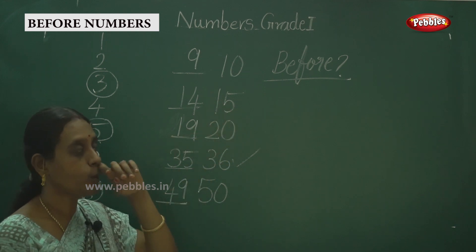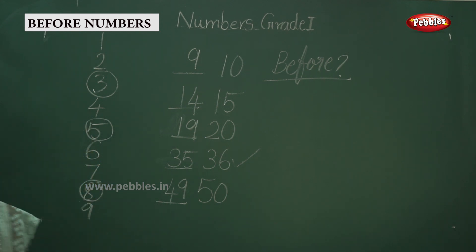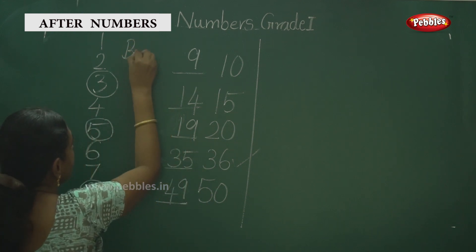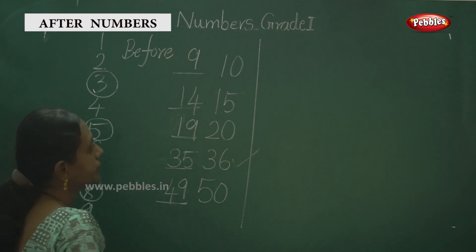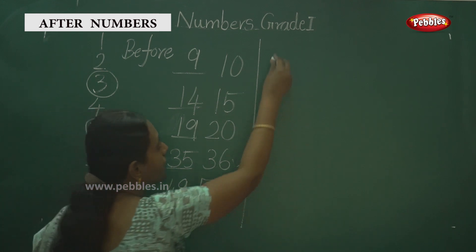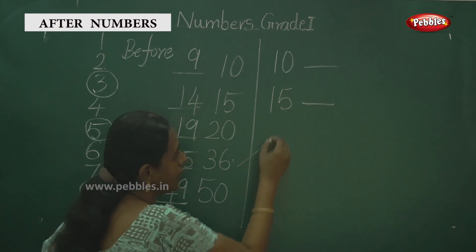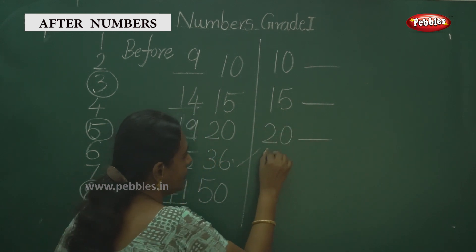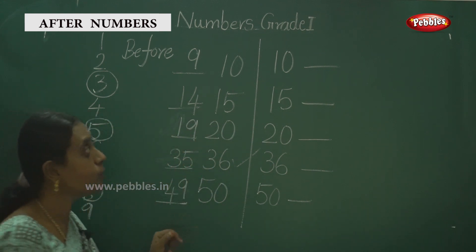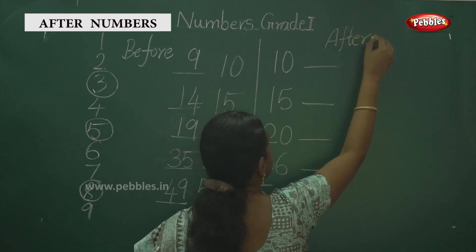Okay. What comes after? This is before. Next we have to discuss after. Now, same examples: 10, 15, 20, 36, and 50. We have to write what is after. After means — come back, come back. That is 10. What comes next?